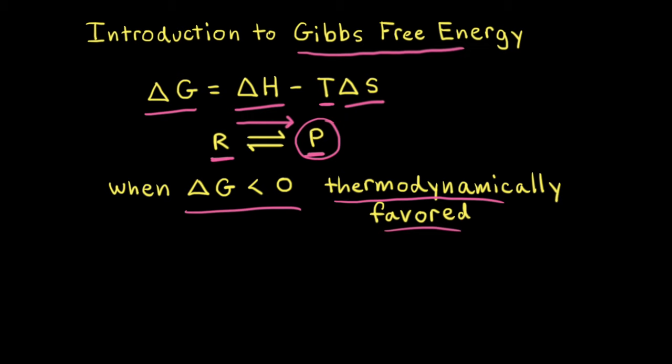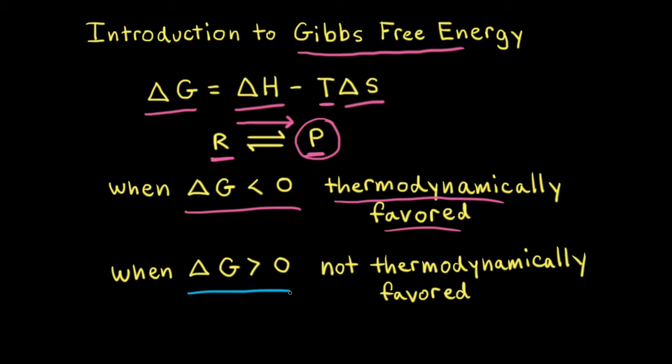Textbooks will often use the word spontaneous, so when delta G is less than zero, the reaction would be spontaneous in the forward direction. When delta G is greater than zero, the chemical or physical process is favored in the reverse direction; therefore, the forward process is not thermodynamically favored. If delta G is greater than zero, the reverse reaction is favored, which favors the formation of the reactants. Textbooks will often say that the reaction is non-spontaneous in the forward direction, which means the reaction is spontaneous in the reverse direction.